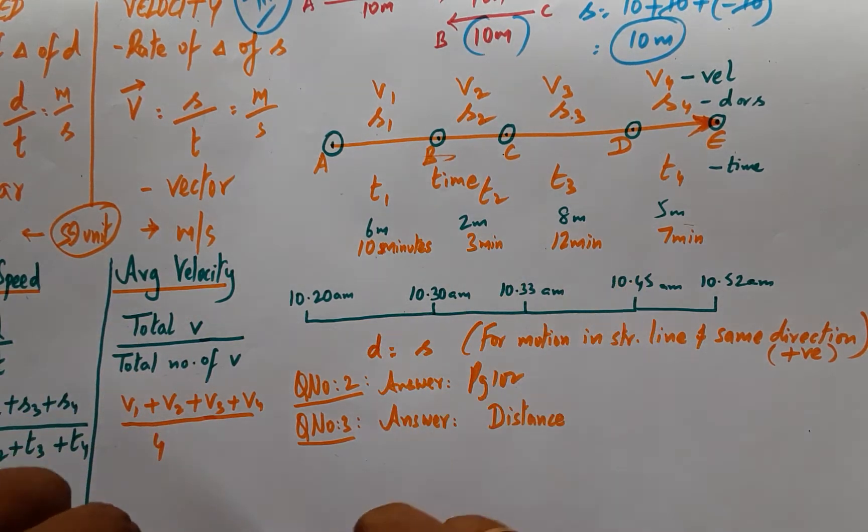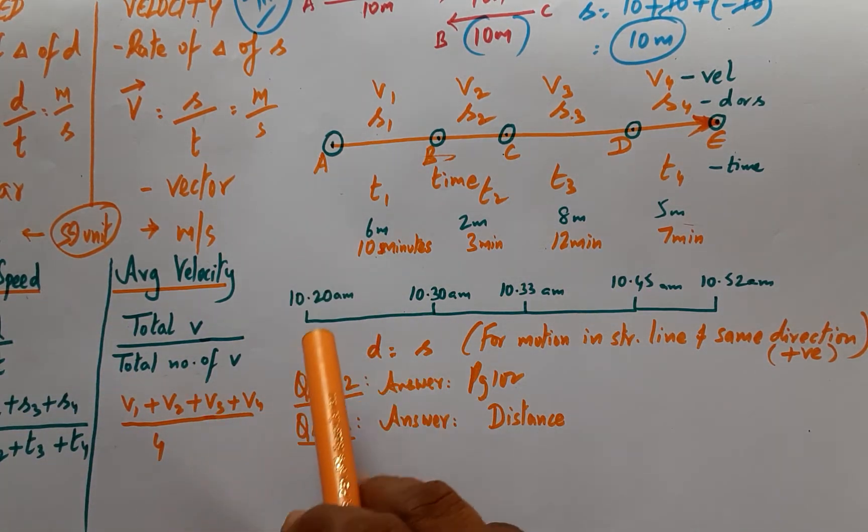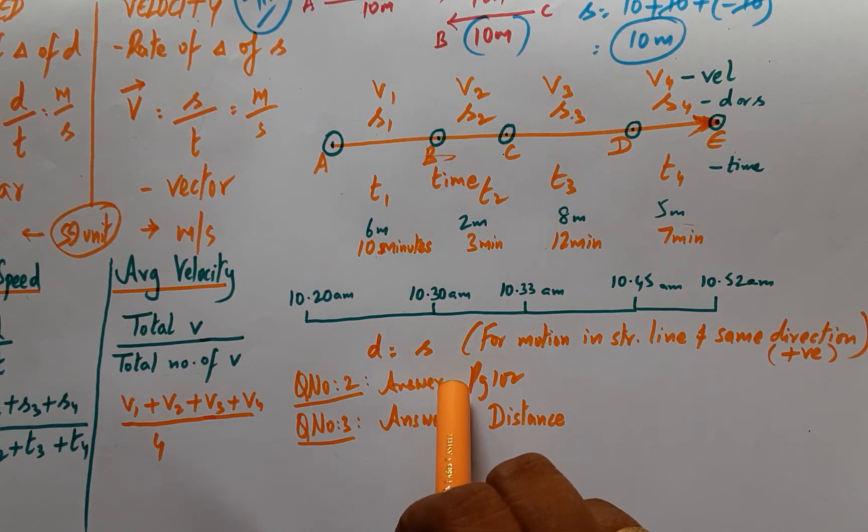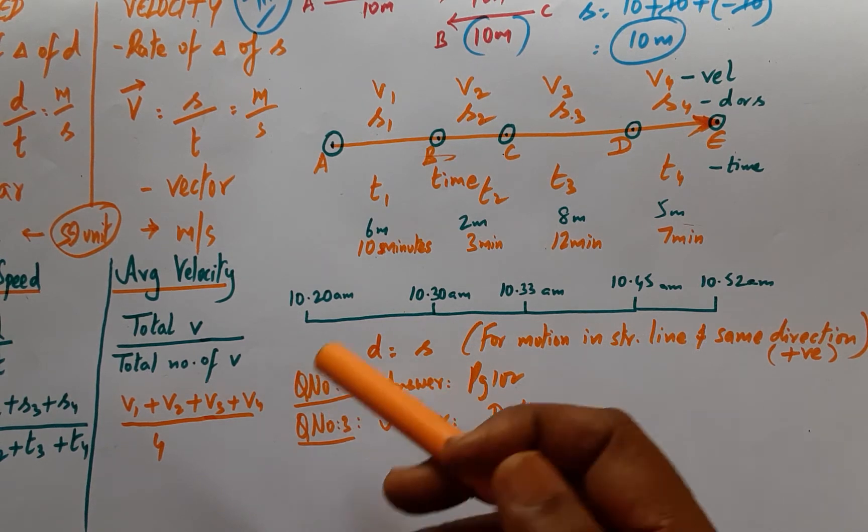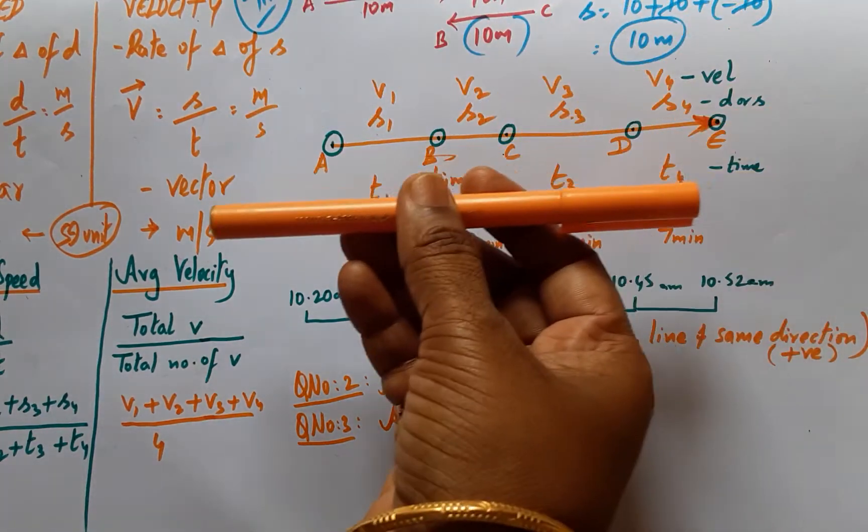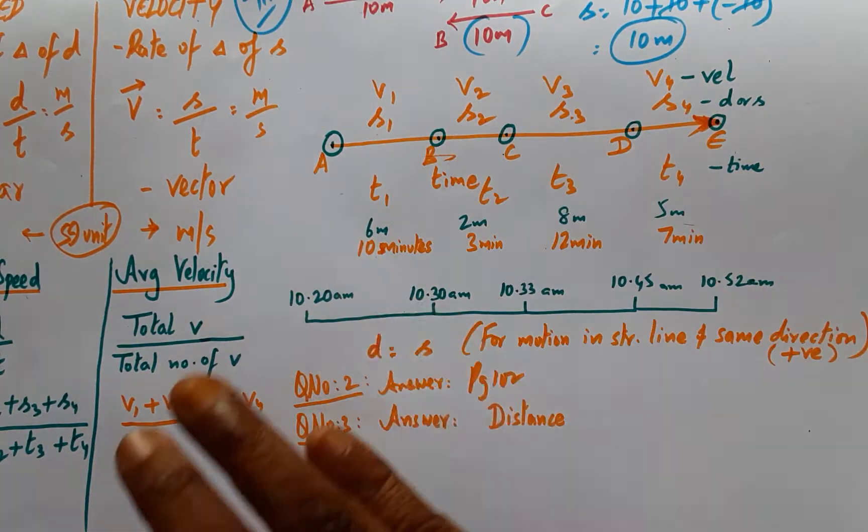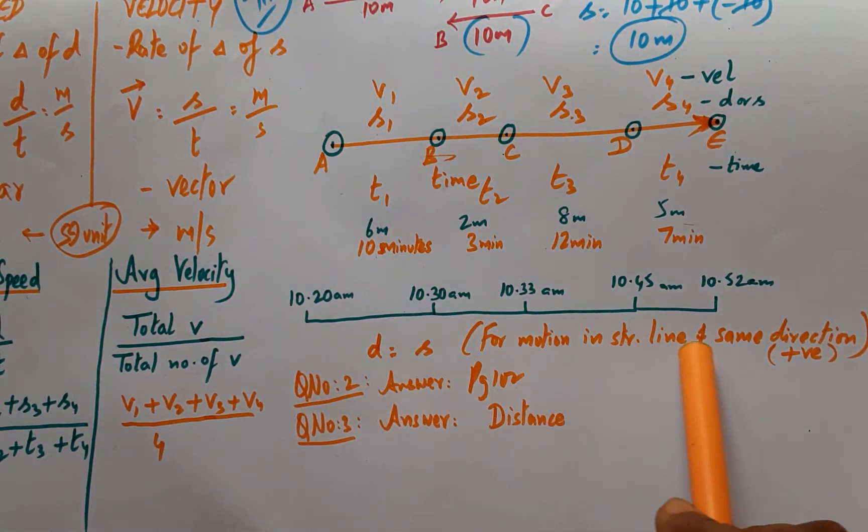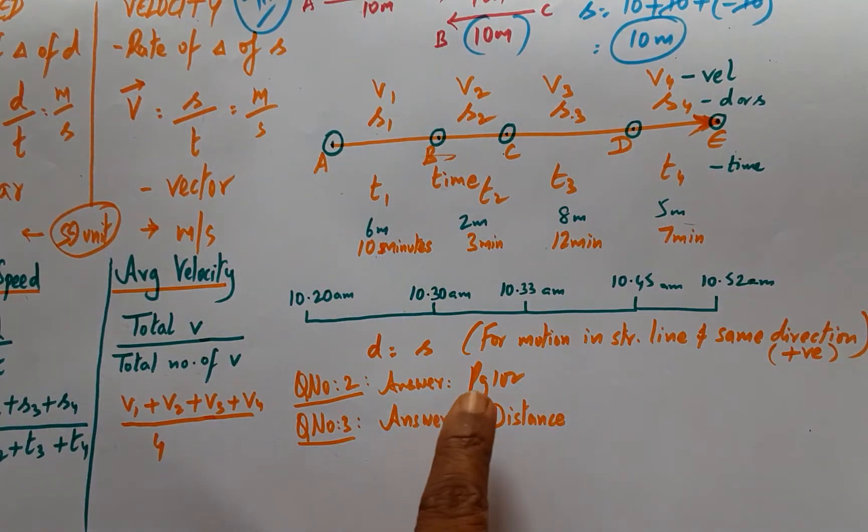That is the only scenario where the speed and velocity magnitudes are in total agreement, because there is no change in direction. Whenever there is a change in direction, obviously velocity changes. Therefore, as long as it is in a straight line in the same direction, there is no change in velocity and it agrees with the speed.